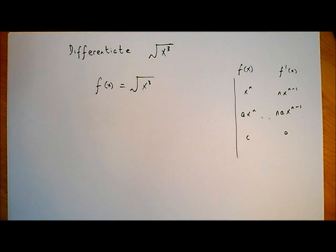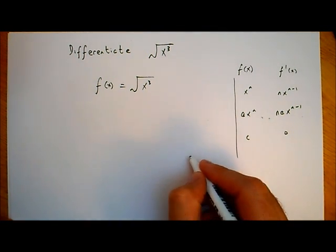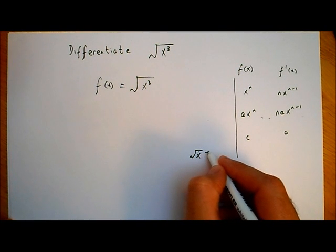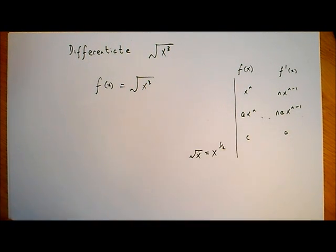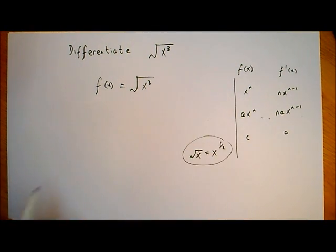But we know that the square root of x can be written as x to the power of a half. So if we have the square root of x, that's the same as writing x to the power of a half. So we're going to use that.